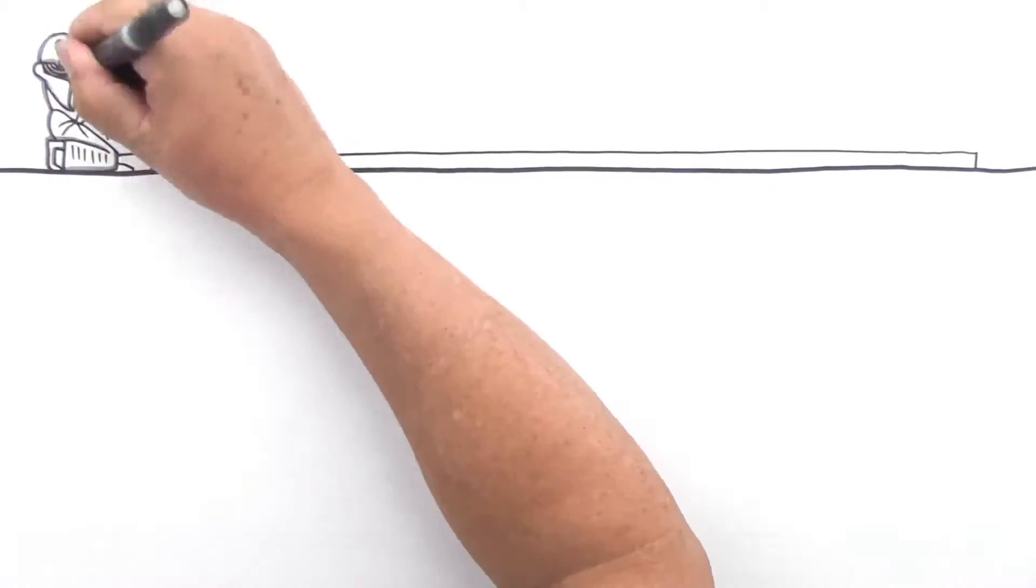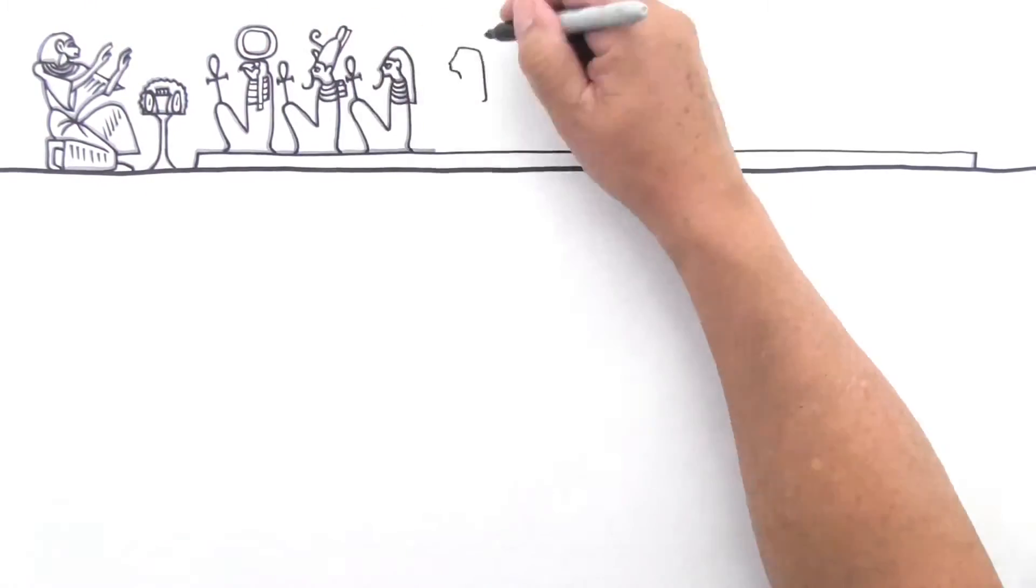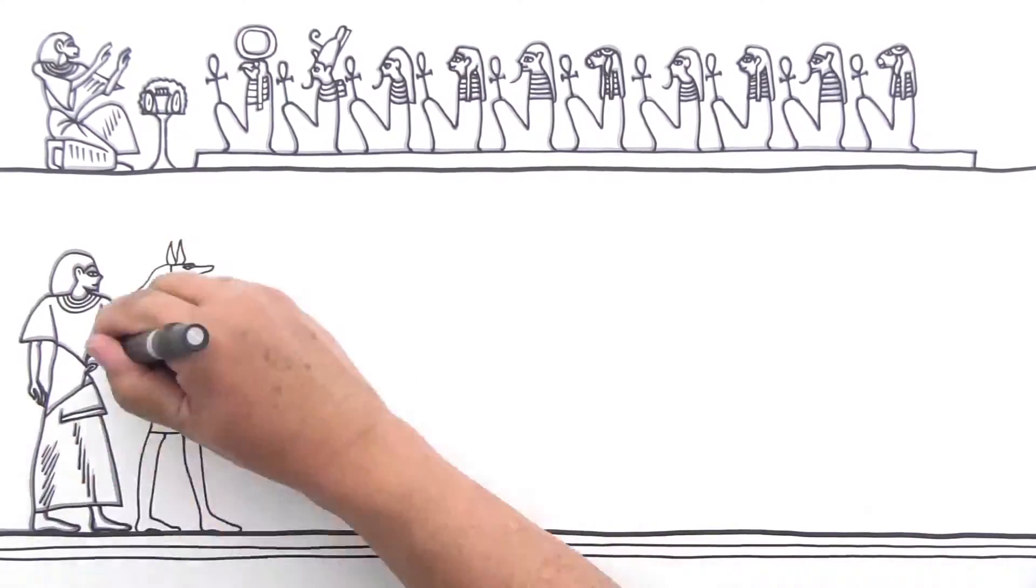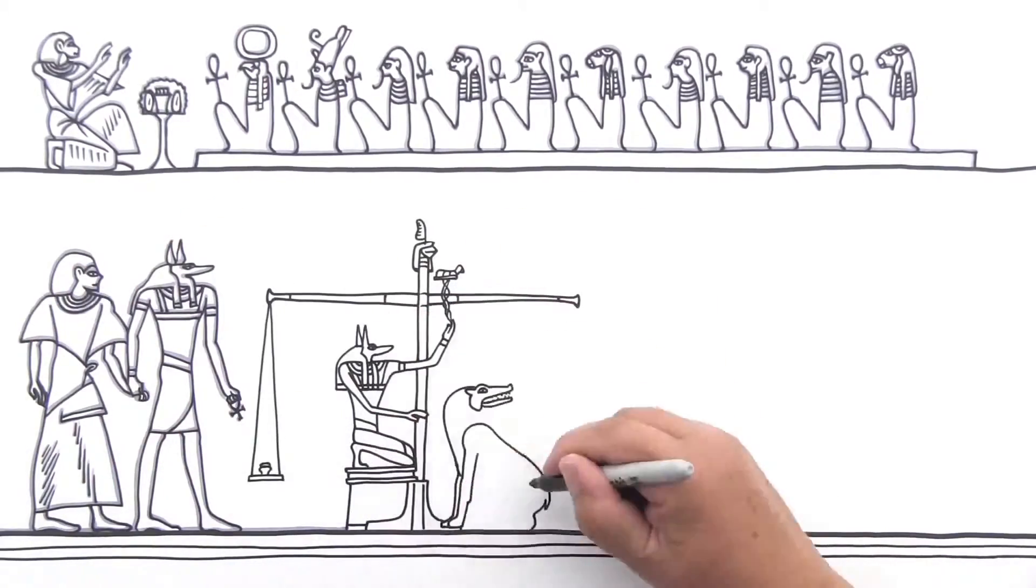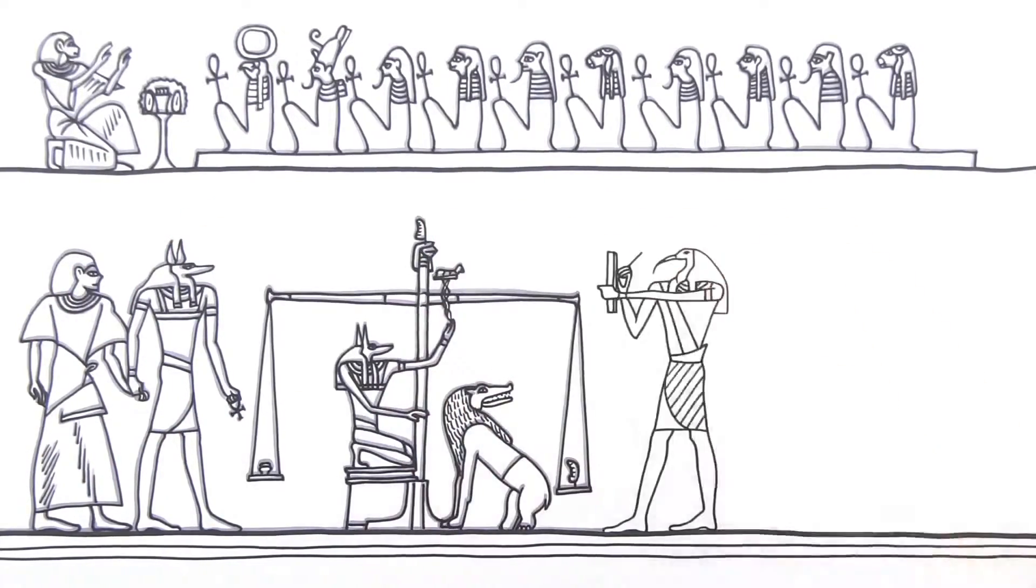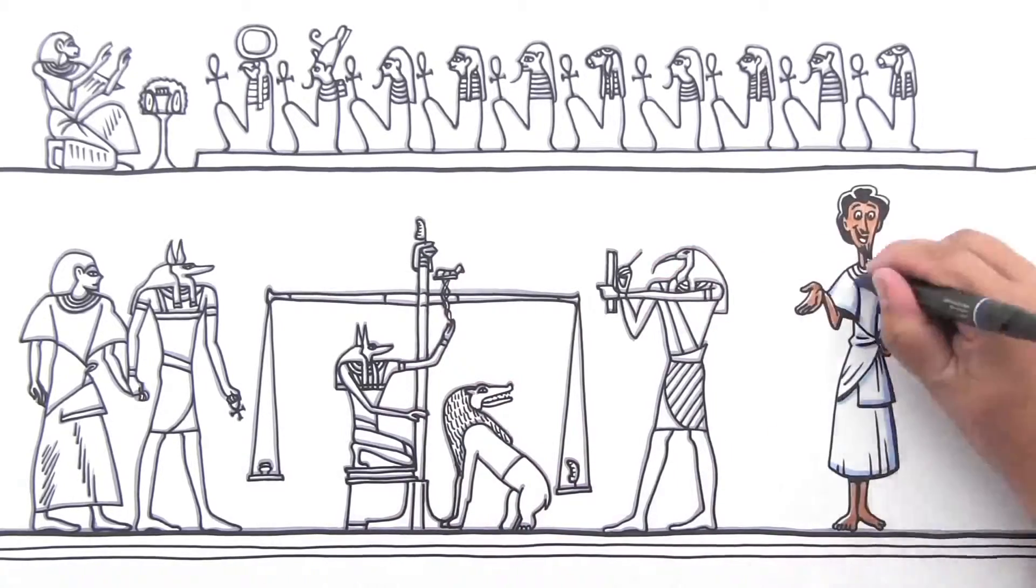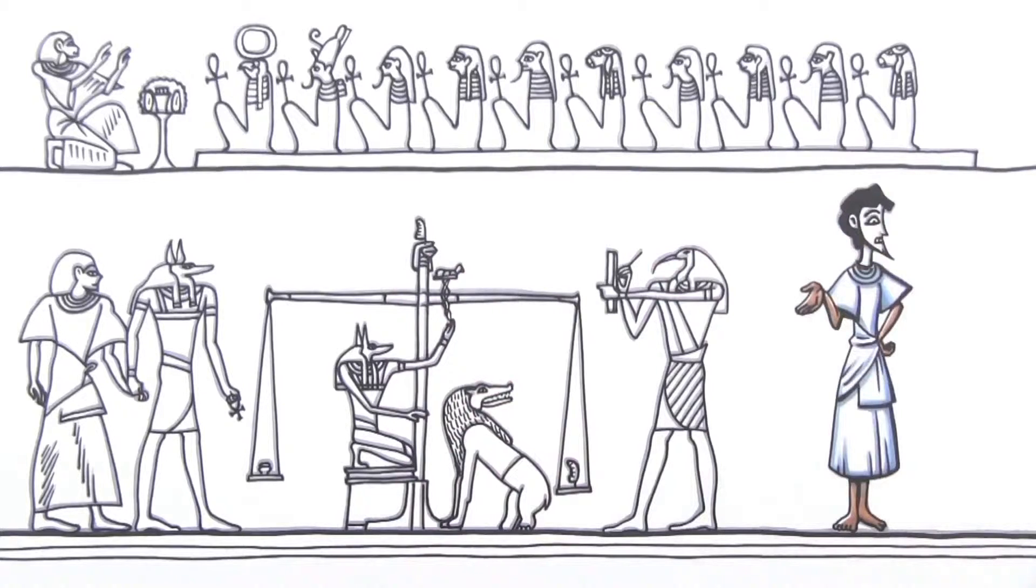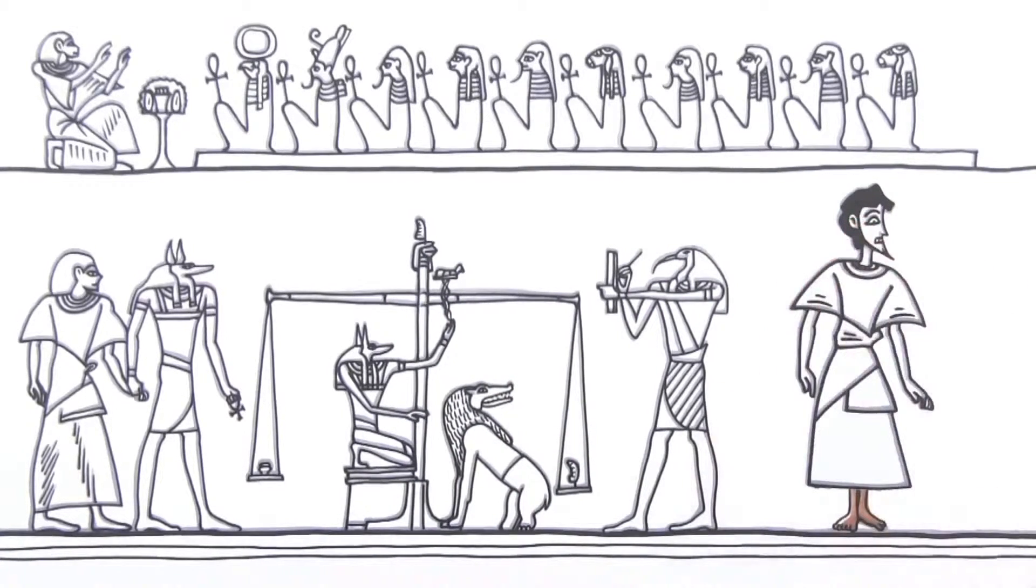Egyptians obsessed over death and the afterlife. Paintings on the walls of tombs often showed the Ba, or soul, on its journey through the afterlife. When an Egyptian artist painted a figure, every body part was shown from its most recognizable angle. The face was shown in profile, except for the eye, which was shown head-on. The body was shown head-on, and the legs and feet were twisted back into profile.